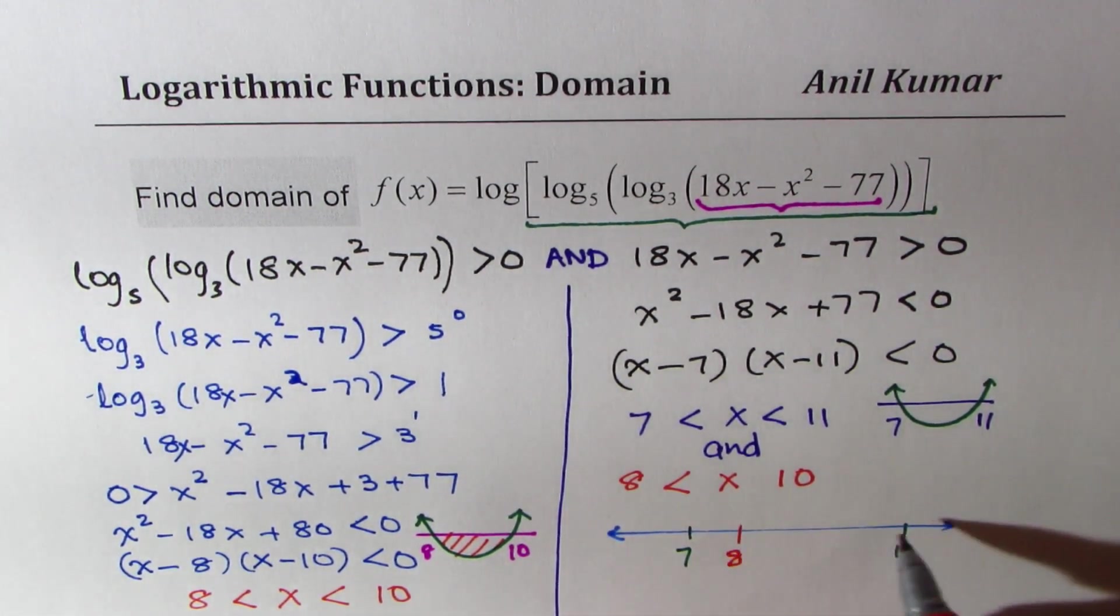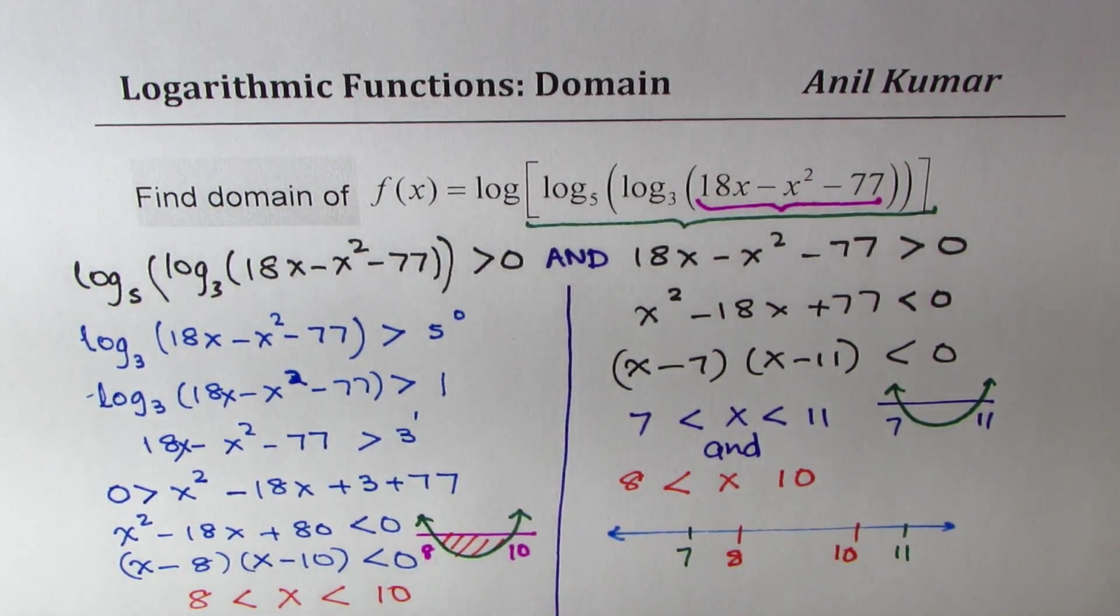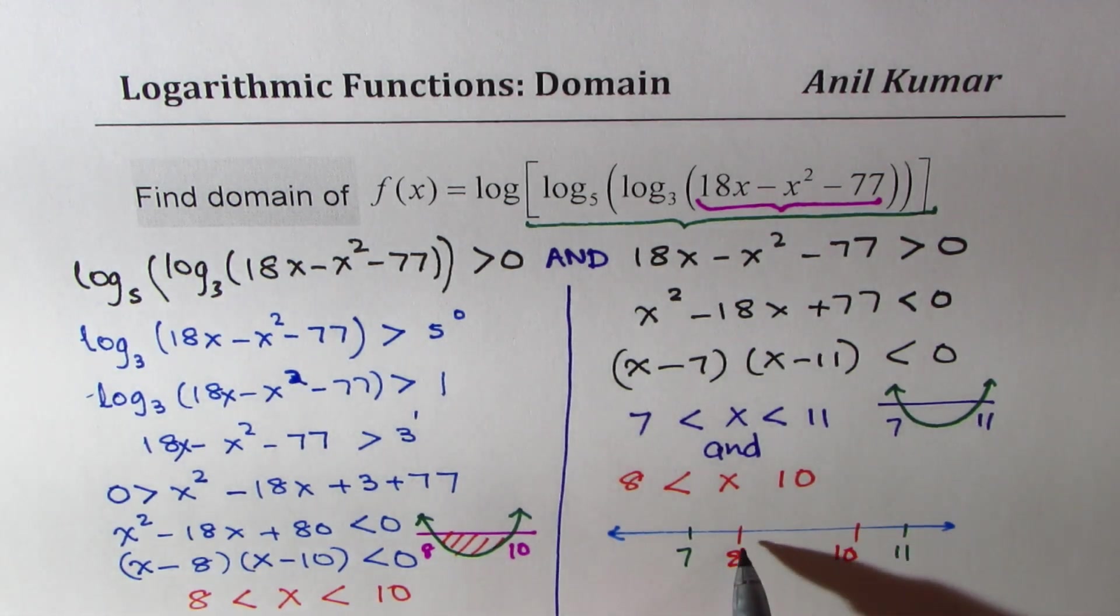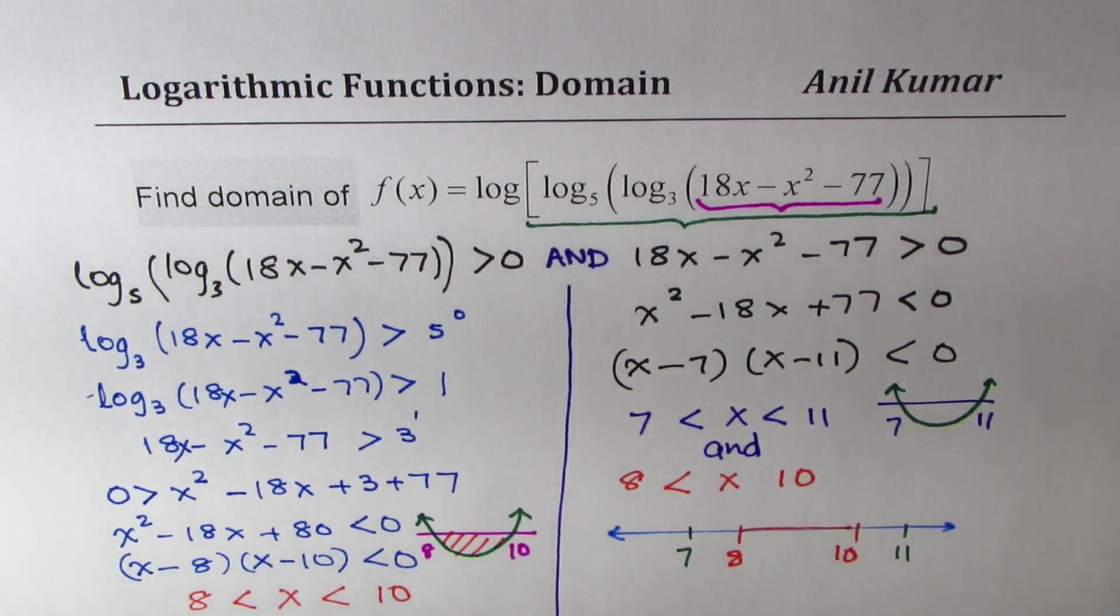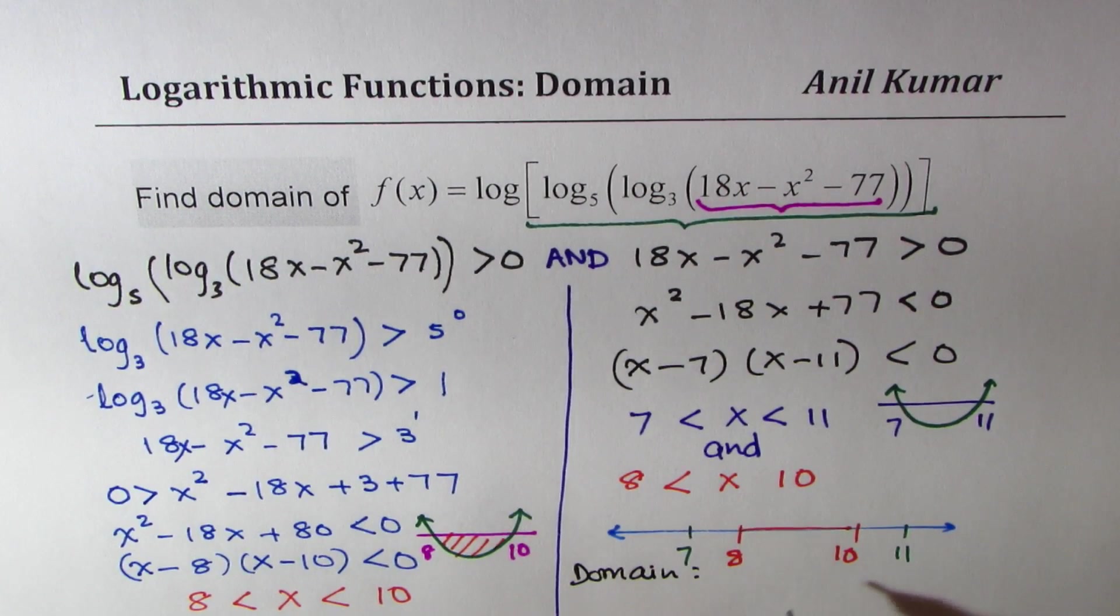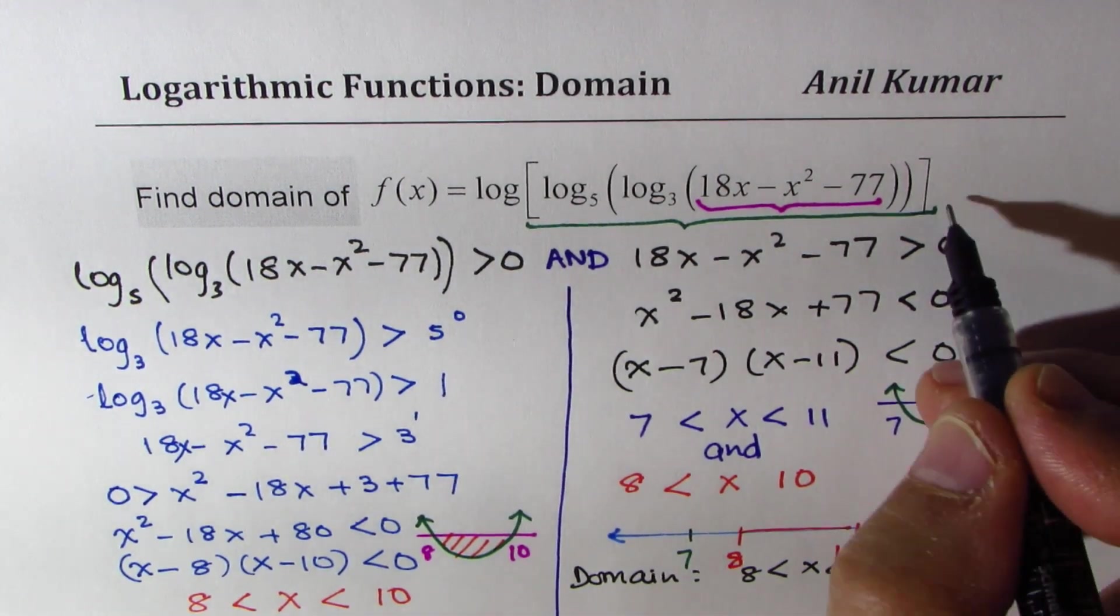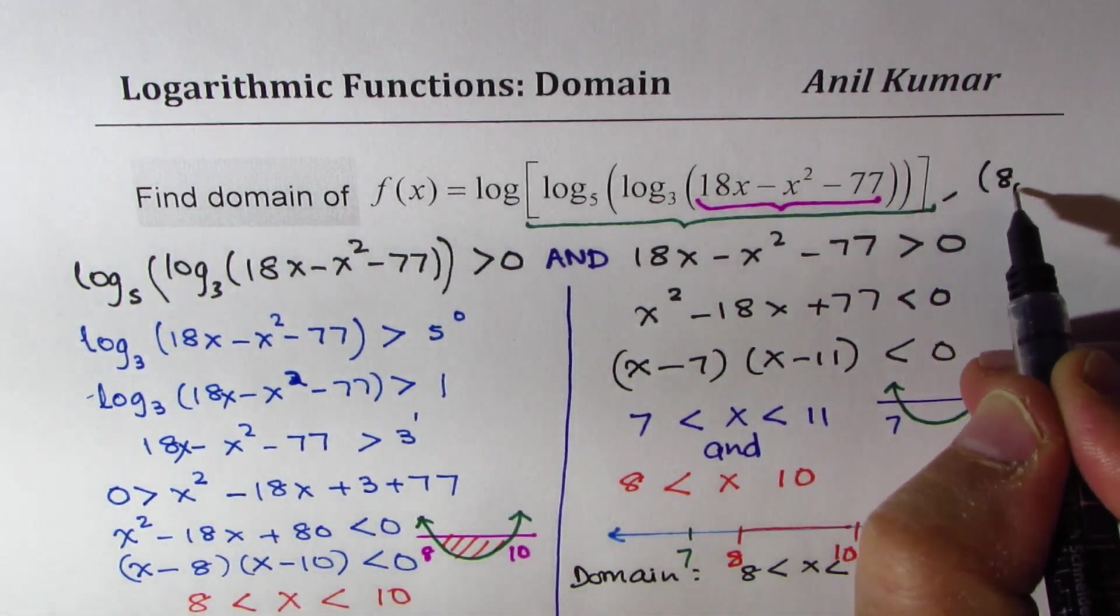8 is on the right side and 10 is here. What should be the domain for this particular function? Clearly, the domain should be this intersection. So we can write that the domain for the function is x greater than 8 and less than 10. So that's our answer. The domain is from 8 to 10.